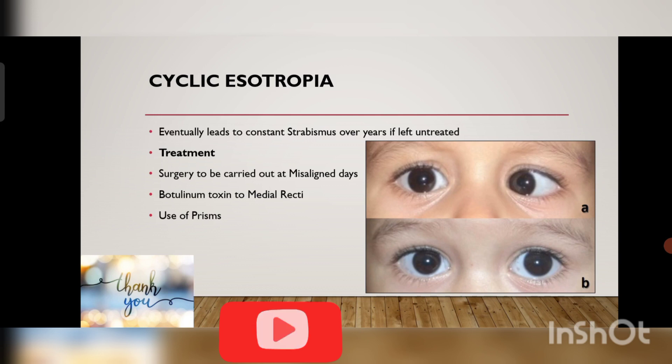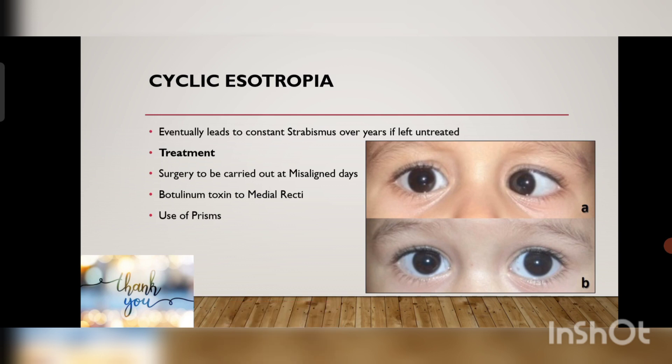Cyclic esotropia needs to be treated at the earliest — you cannot leave it. Surgery needs to be carried out on the misaligned days, because if surgery is done on straight days, over-correction or under-correction can result. Botulinum toxin can be given to the medial rectus, and prisms can be used. Before surgery, on the misaligned days, you can give prisms and vision therapy as well.